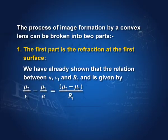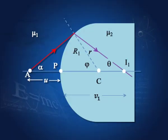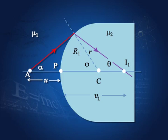Let us break image formation by a convex lens into two parts. For refraction at the first surface with radius of curvature R1, with mu 1 outside and mu 2 inside the lens, we have: mu 2 by V1 minus mu 1 by U equals mu 2 minus mu 1 by R1, where V1 is the intermediate image distance. For the second surface with radius of curvature R2, I1 (at distance V1) is the virtual object, and the actual image forms at I (distance V). Applying the refraction formula again gives: mu 1 by V minus mu 2 by V1 equals mu 1 minus mu 2 by R2.